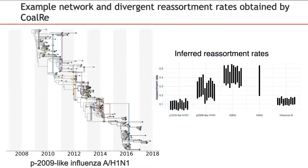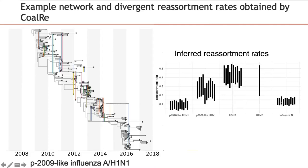We have run CoalRe analysis on genetic sequences from four influenza A strains and one influenza B strain. On the left, you can see an example maximum clade credibility network that summarizes the posterior distribution of networks for the pandemic 2009-like influenza A H1N1 strain. The vertical color lines show the reassortment events between the network lineages. On the right, the posterior distribution of reassortment rates for 10 subsamples of each dataset are shown. Significant differences in reassortment rate can be observed between influenza viruses.